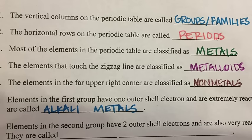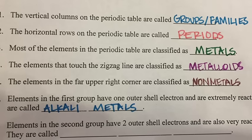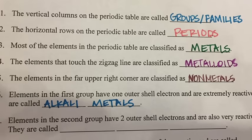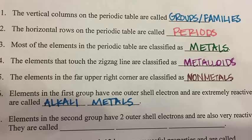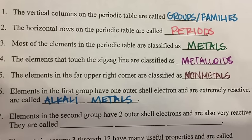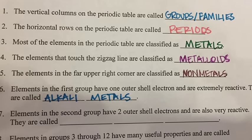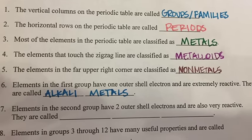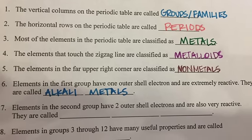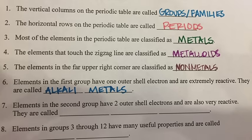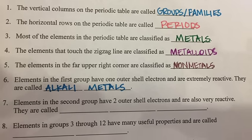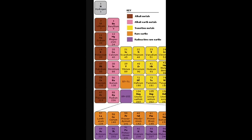Within the broad categories of metals and non-metals, we have smaller groups or families — those are the vertical columns. The first group or family is called the alkali metals. These metals are extremely reactive and are never found in nature in their pure form because they would react immediately. They are silver colored and shiny, have a very low density, are very soft, and could even be cut with a knife.